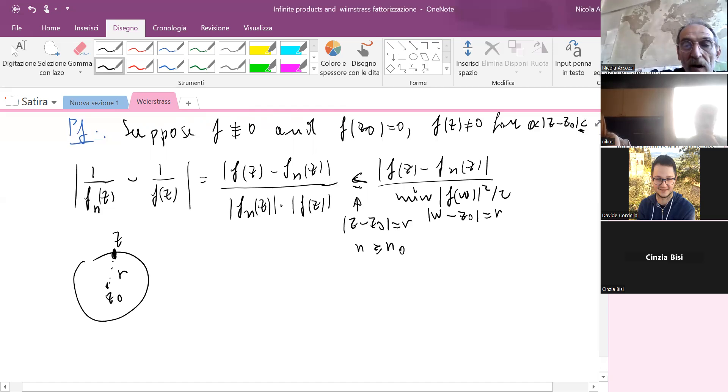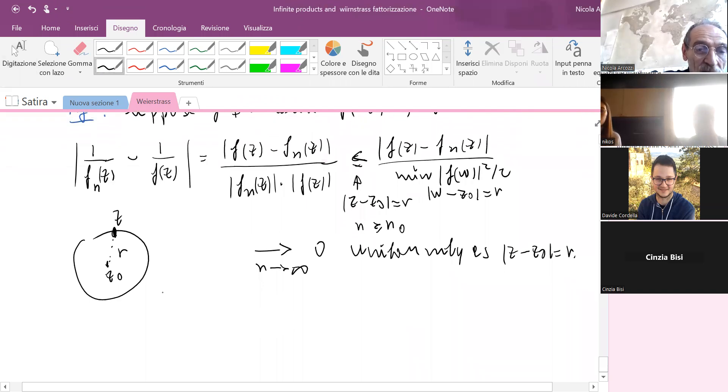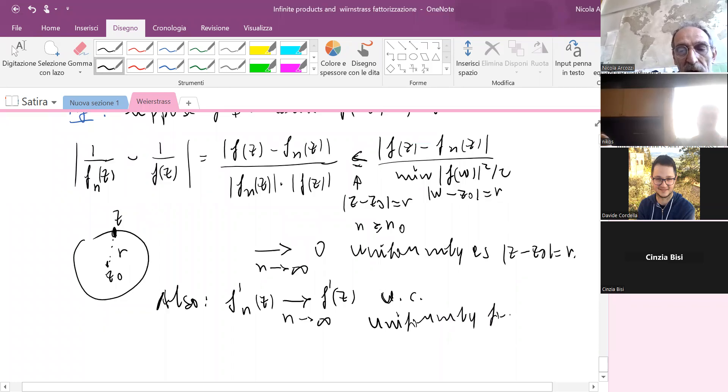And if I let n to infinity, the last quantity goes to 0 uniformly on this circle. And by Weierstrass, we have that f'n(z) goes to f'(z) uniformly on compact sets, in particular uniformly for |z - z₀| = r.